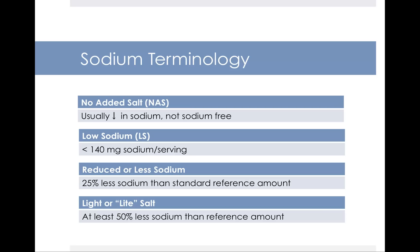Sodium terminology on packages: 'No added salt' (NAS) means the food is low in sodium but may not be sodium-free — salt just hasn't been added during processing. A low sodium food contains less than 140 milligrams per serving. 'Reduced or less sodium' means 25% less sodium than the standard reference amount. 'Light' or 'lite' salt foods have at least 50% less sodium than the reference — for example, reduced sodium Triscuits would have 25% less sodium than regular Triscuits.